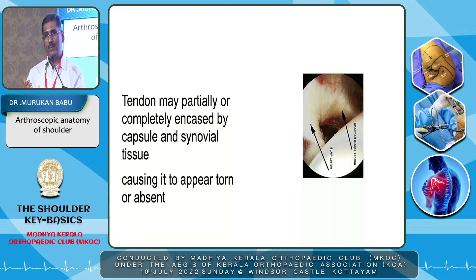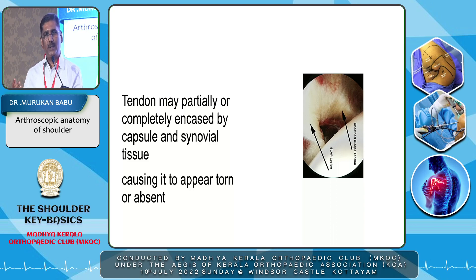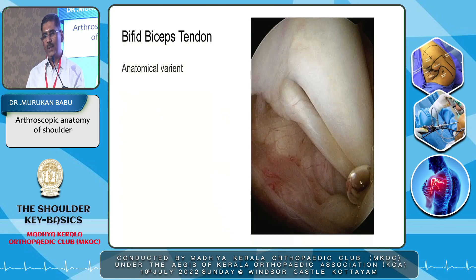Sometimes the biceps tendon may be completely or partially encased by capsule and synovial tissue, and you may not be able to see the biceps tendon at all. You may think that the biceps tendon is absent, but it is covered by synovium — and you should know that this is a normal anatomical variant. Sometimes you can see a bifid biceps tendon, which is also an anatomical variant.